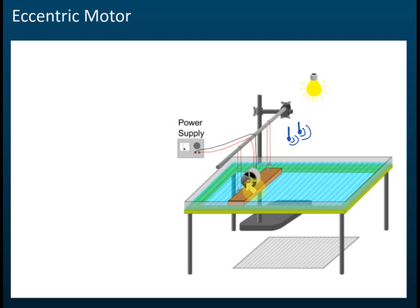We also have what we call an eccentric motor, which can be connected to a power supply. This is used to produce oscillations or vibrations.